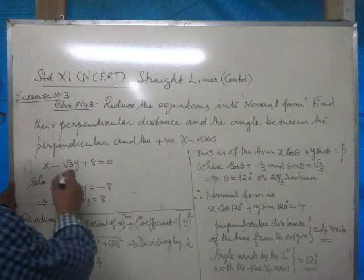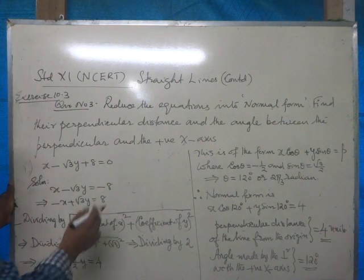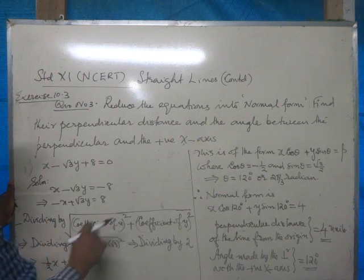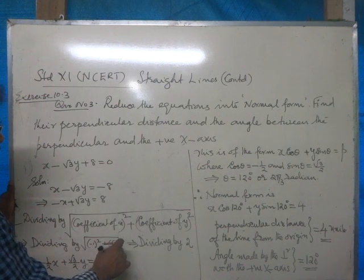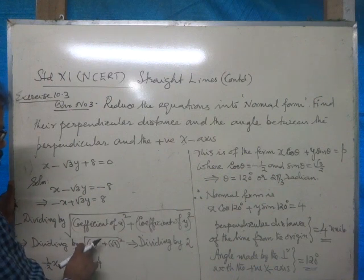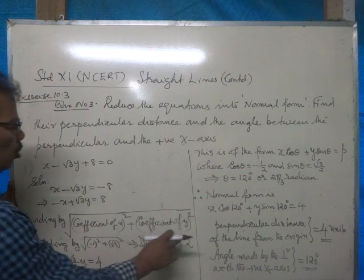Now, the coefficient of x is negative 1, the coefficient of y is root 3. That is square root of negative 1 squared plus root 3 squared. That is equal to square root of 1 plus 3, which is 4. That is equal to 2.